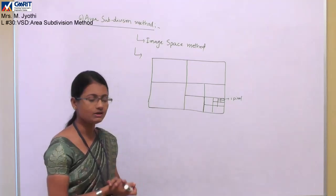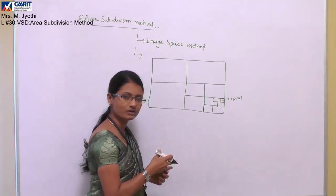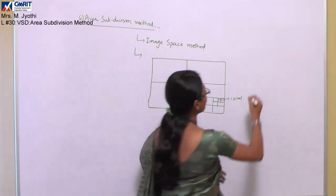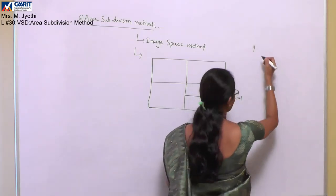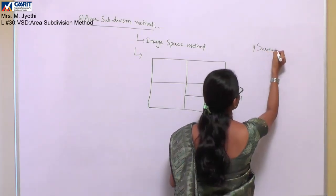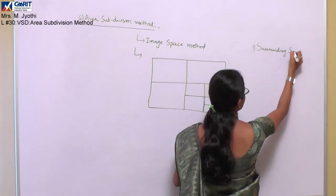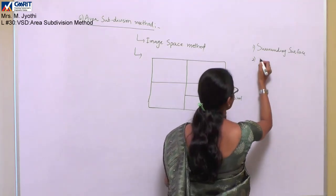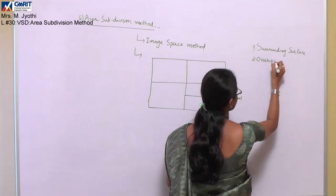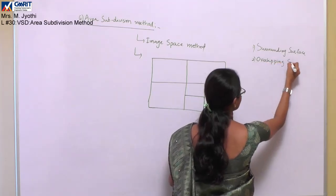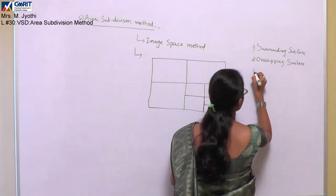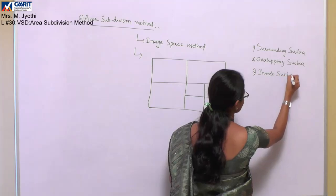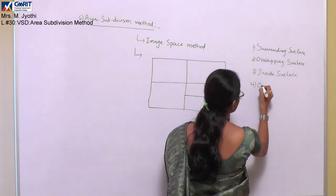We have four options based on the relationship between the surface and the area. The first type is the surrounding surface. The second type is the overlapping surface. The third type is the inside surface. And the fourth type is the outside surface.